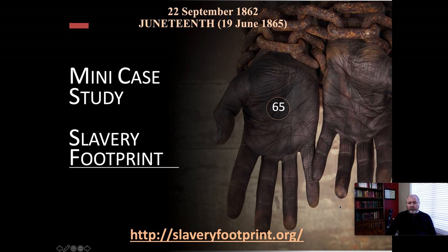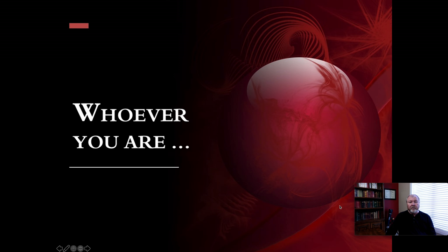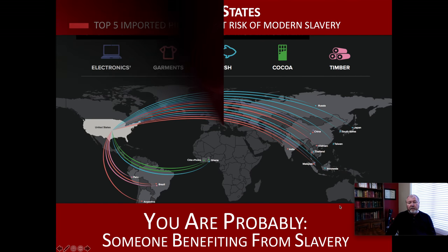These are two important dates. The 22nd of September, 1862 — these are more relevant for people who live in the United States — that was when Abraham Lincoln signed the Emancipation Proclamation, freeing the slaves in the southern states. It didn't go into effect until the 1st of January, 1863. Juneteenth, 19th of June, 1865, that's when slaves were freed in Texas. But whoever you are, like me, you benefit from slavery.